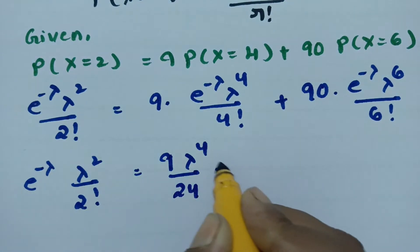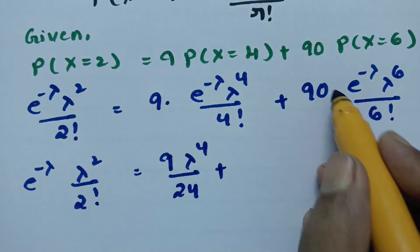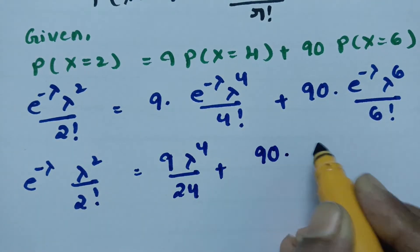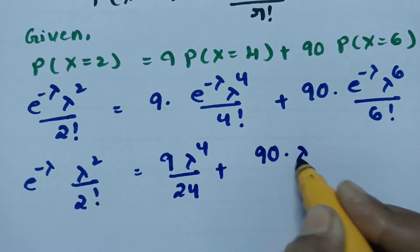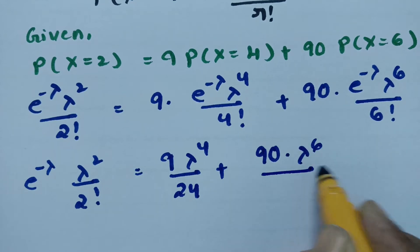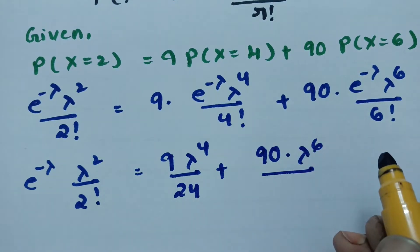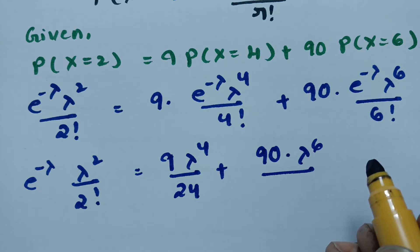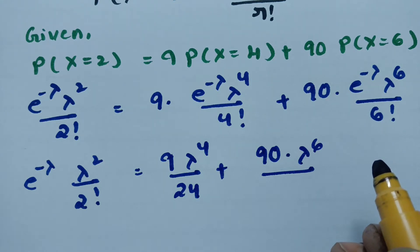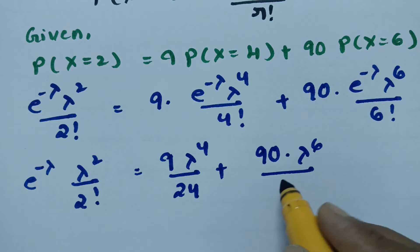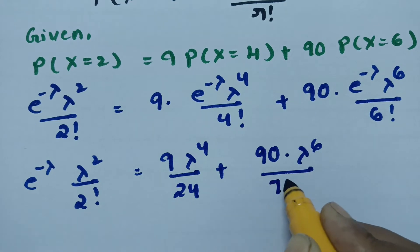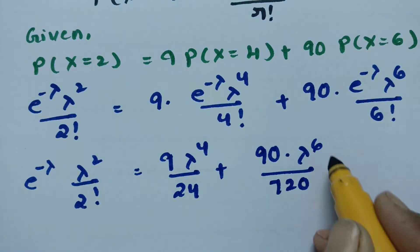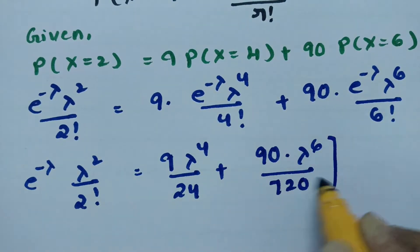Plus 90 times e to the power minus lambda times lambda to the 6 by 6 factorial. Here 6 factorial equals 1 times 2 times 3 times 4 times 5 times 6, which equals 720.